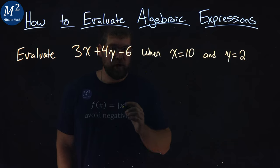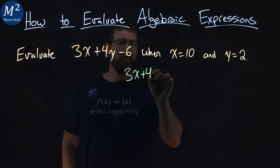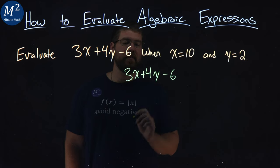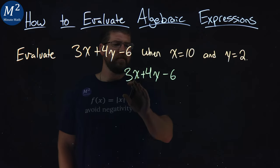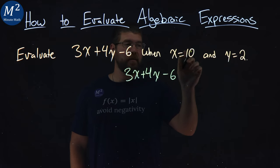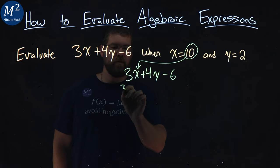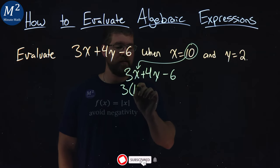Let's rewrite my expression here. 3x plus 4y minus the 6. Once I have it rewritten here, I'm going to substitute when x is 10. So I'm going to take this 10, and I'll plug it in for that x value right there. So 3 times, instead of x, I put a 10.